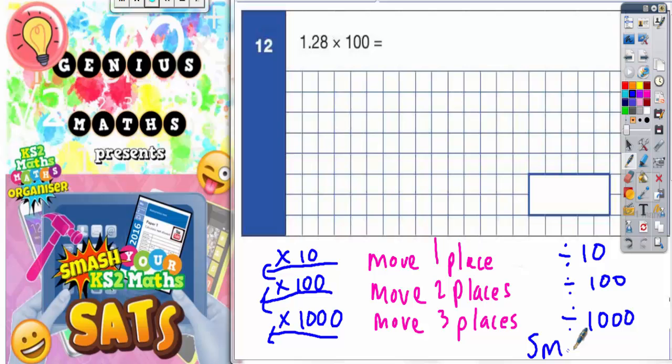So when you move the digits forward, the number gets bigger. When you move the digits backwards, the number gets smaller. Dividing by 10 means you move the digits one place to the right, divide by 100 two places to the right, divide by 1000 three places to the right.